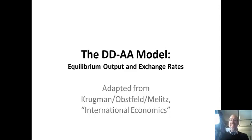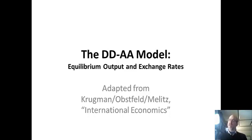Now I'm going to talk about the DDAA model of international macroeconomics and international finance. This is taken from the popular Krugman-Obsfeldt-Mellett textbook, International Economics Theory and Policy. This model gives us equilibrium output and exchange rates in an open economy with perfect capital mobility.